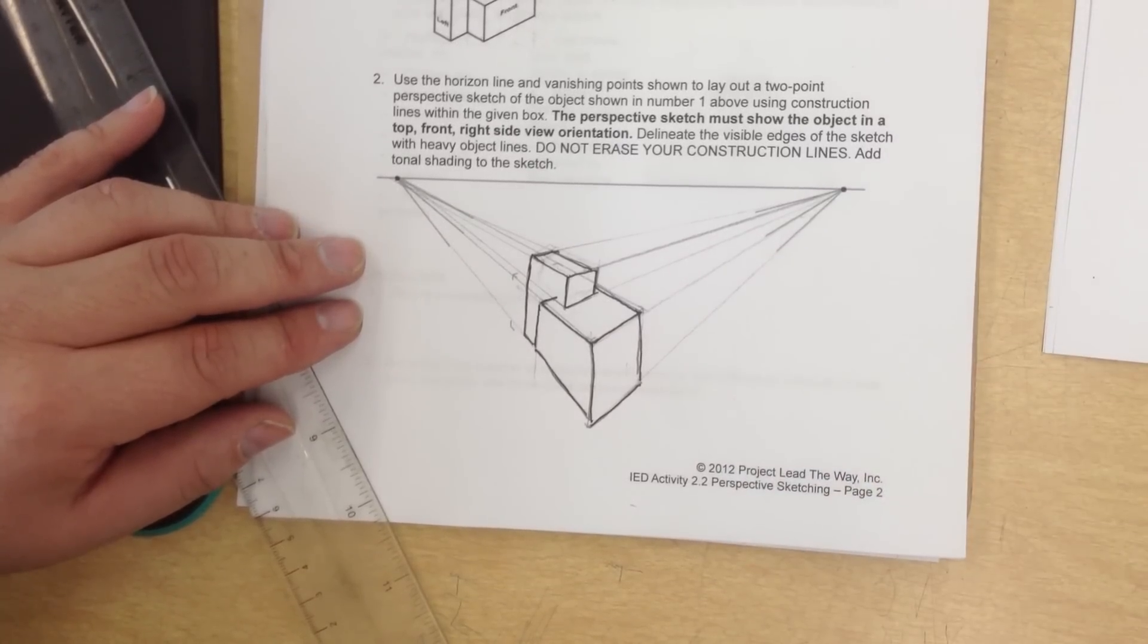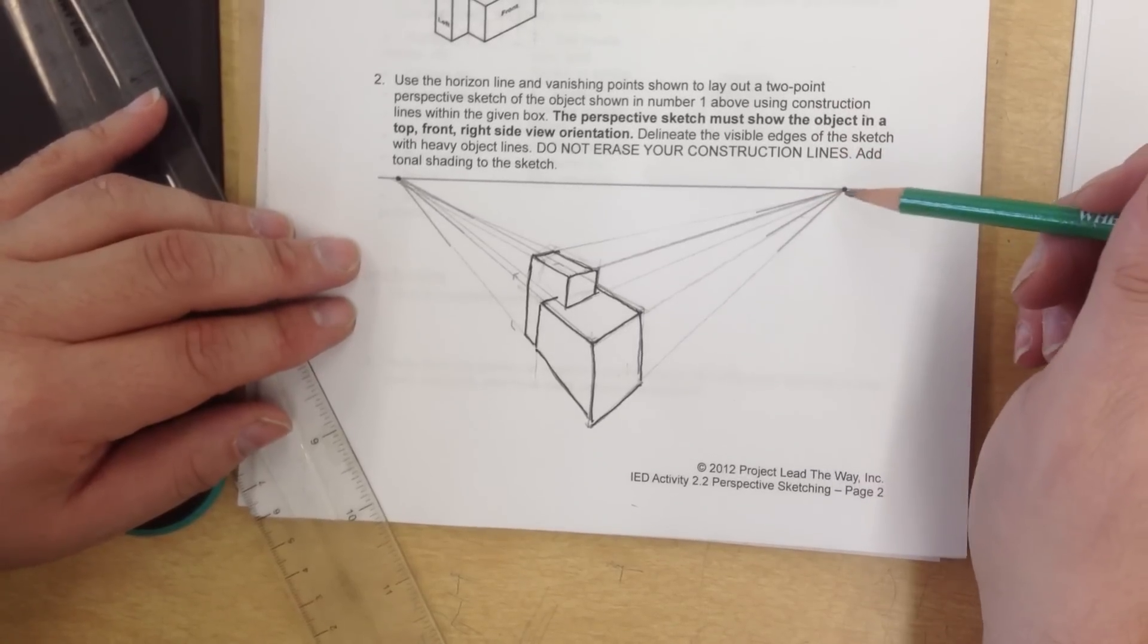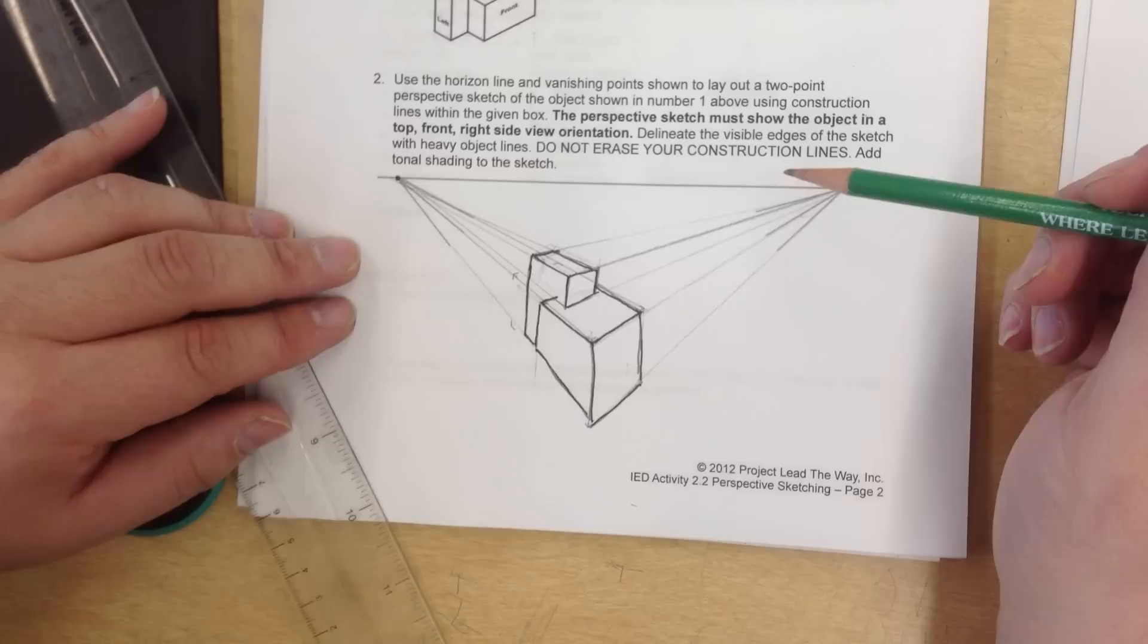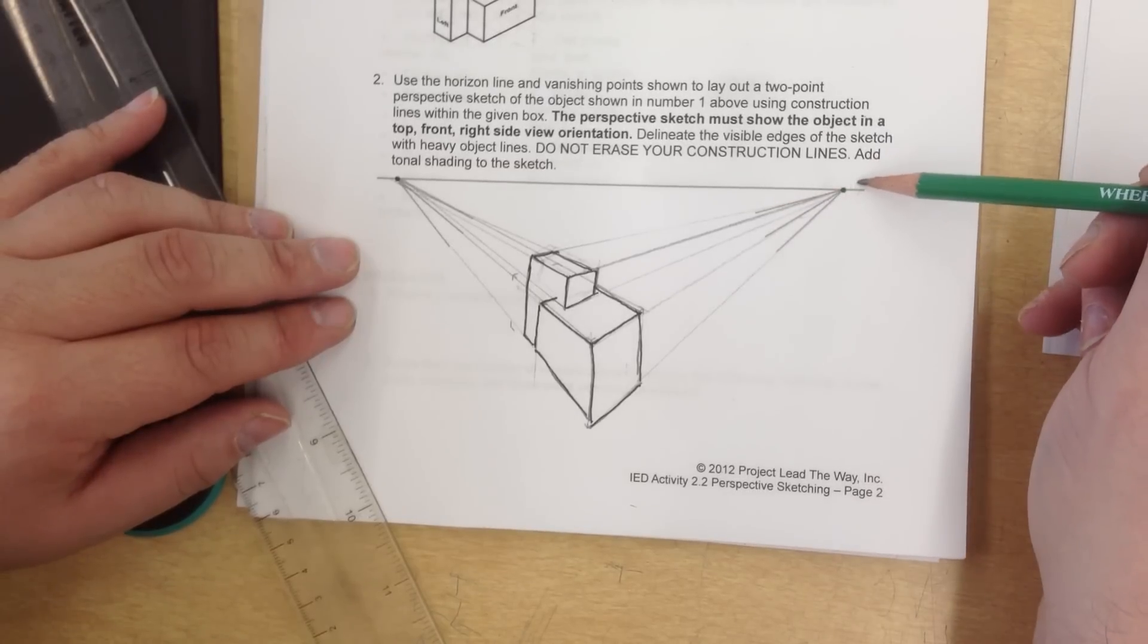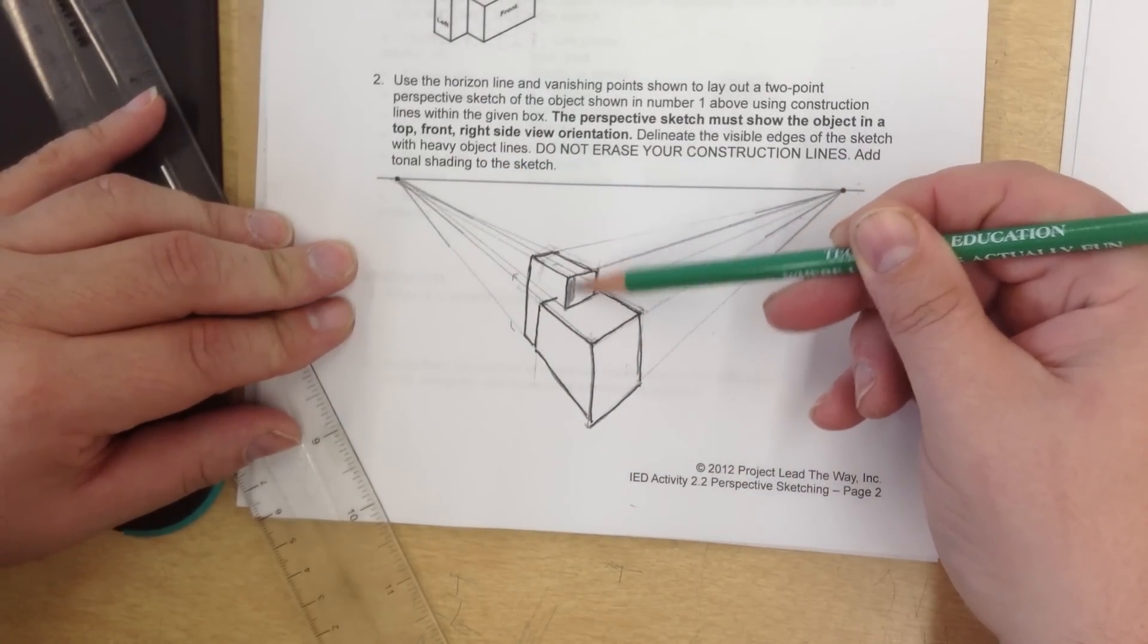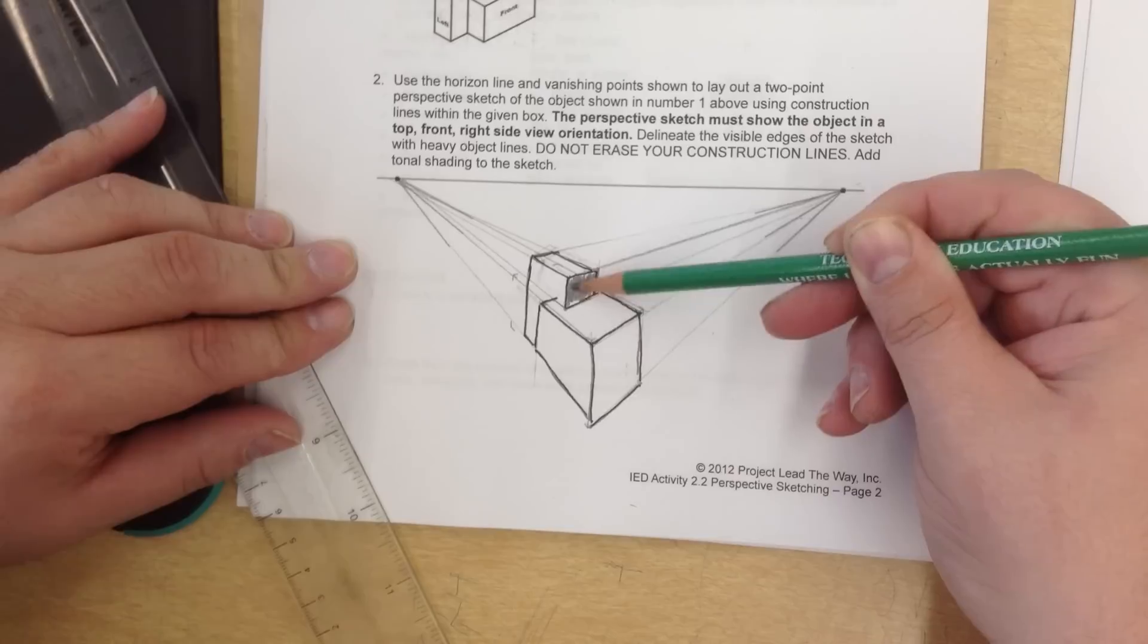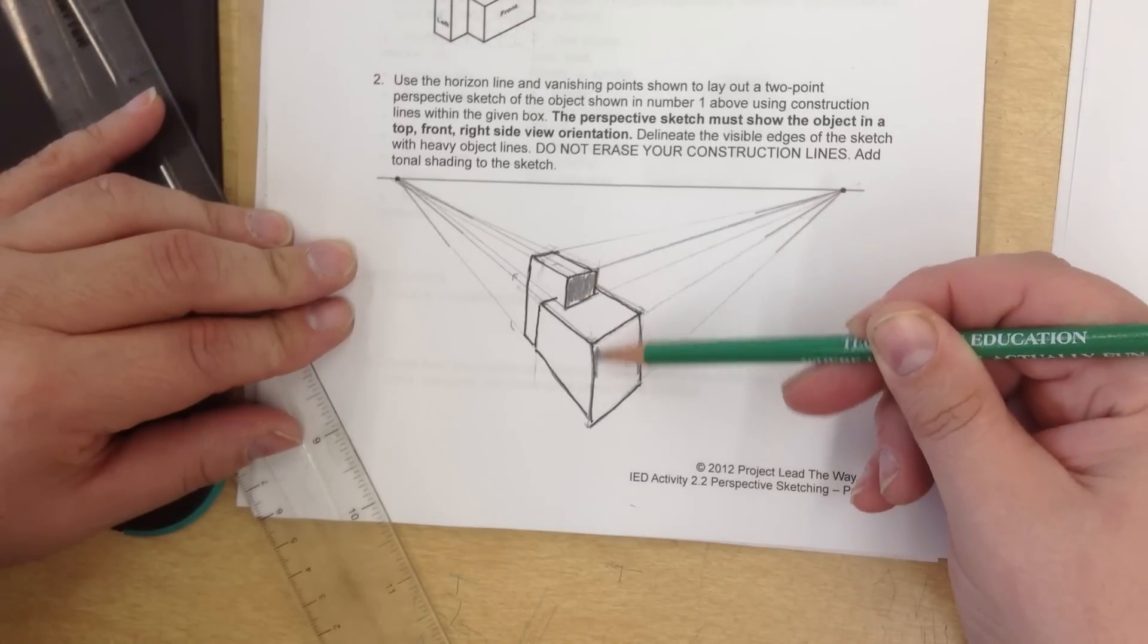So once you're done, stop this, rewind it. I should mention it says to do tonal shading as well. Remember, this is going to be the sun. This is going to be the sun. So this is going to be dark. This is going to be dark.